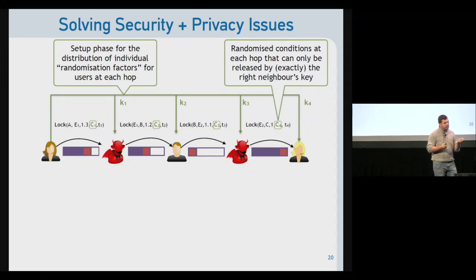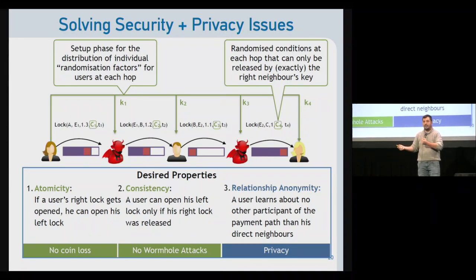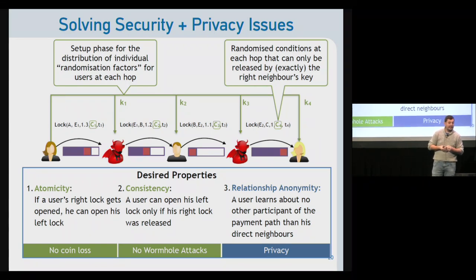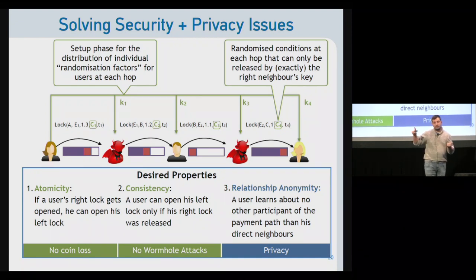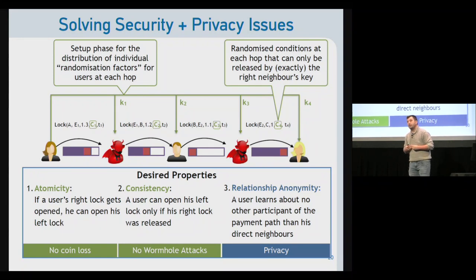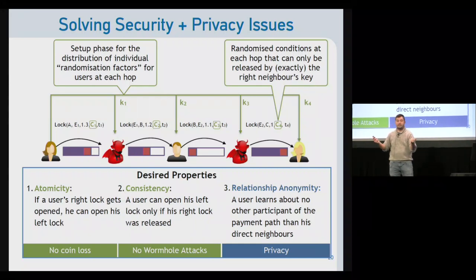With these two main ideas we aim to achieve three properties. First, atomicity: if a user's right lock gets opened, they should be able to open the one on the left — no coins are lost. Second, consistency: if a user opened the left lock, they must have opened the right — preventing Wormhole attacks. Third, privacy: a user should learn nothing about participants beyond their direct left and right neighbors in the path.